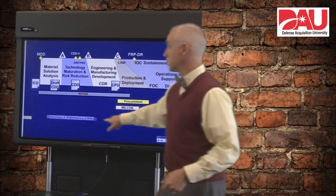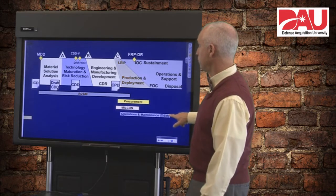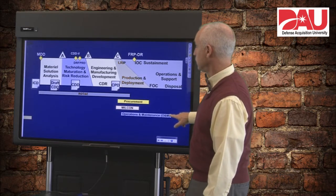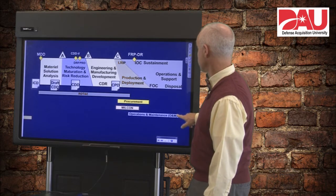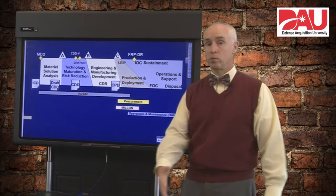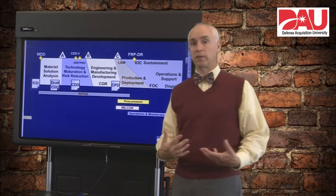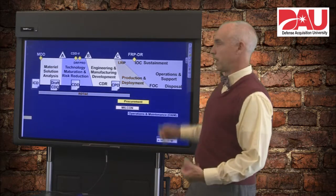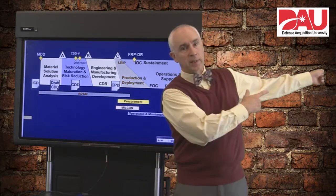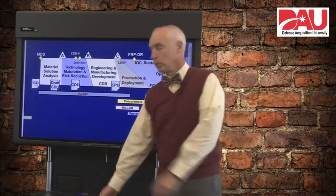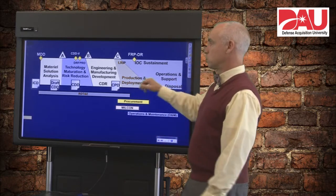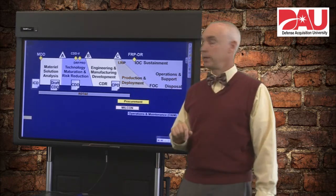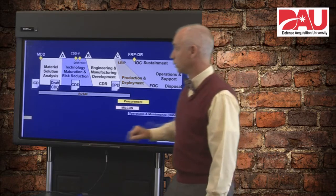Operations and maintenance — as soon as we start fielding, then we probably ought to start with the O&M appropriation, and it's going to go out through the rest of the life cycle of the system. If this were built to scale, it would go about 20 feet that way, probably, because remember we're going to spend most of our life cycle out here in operations and support.